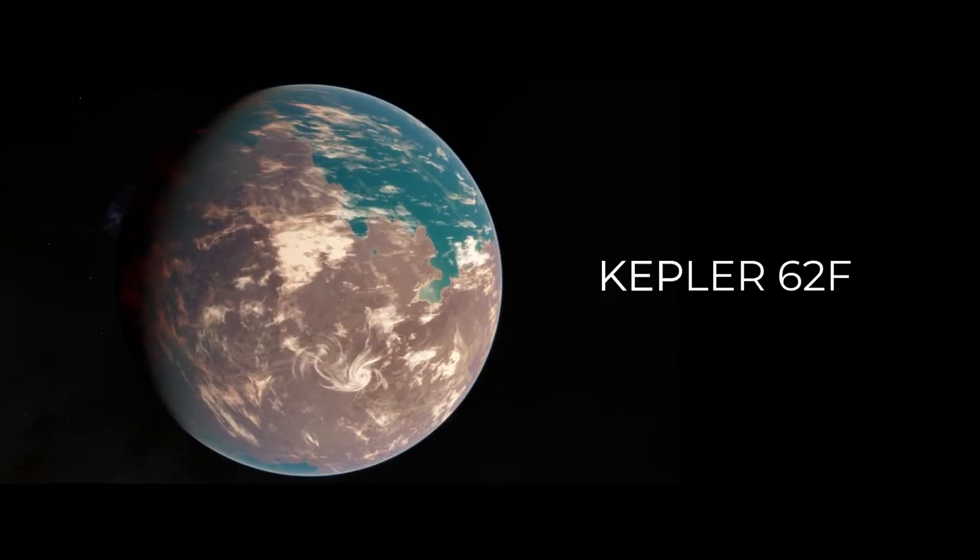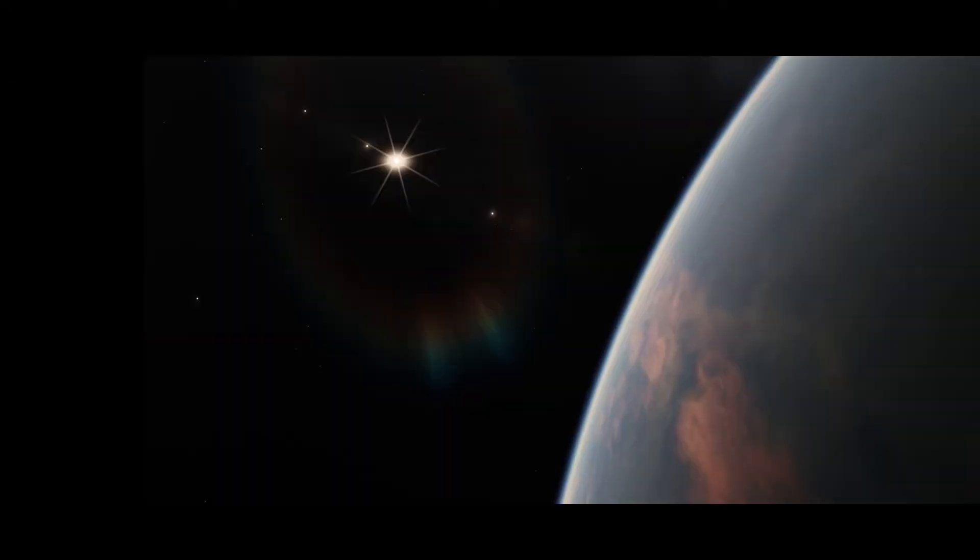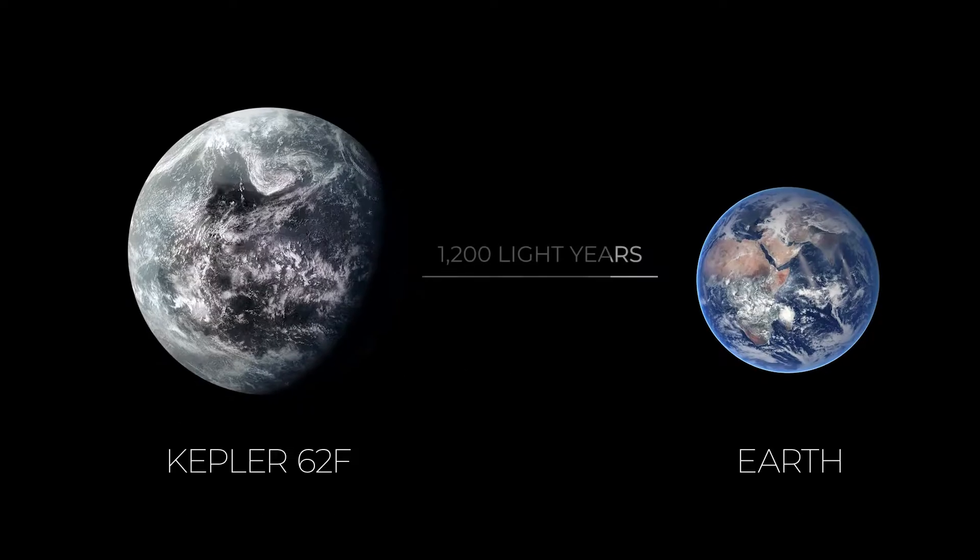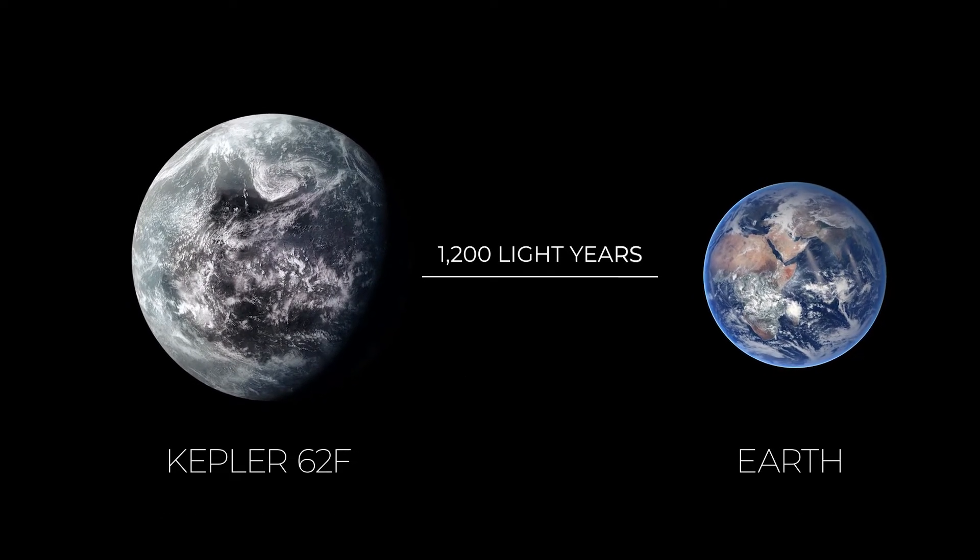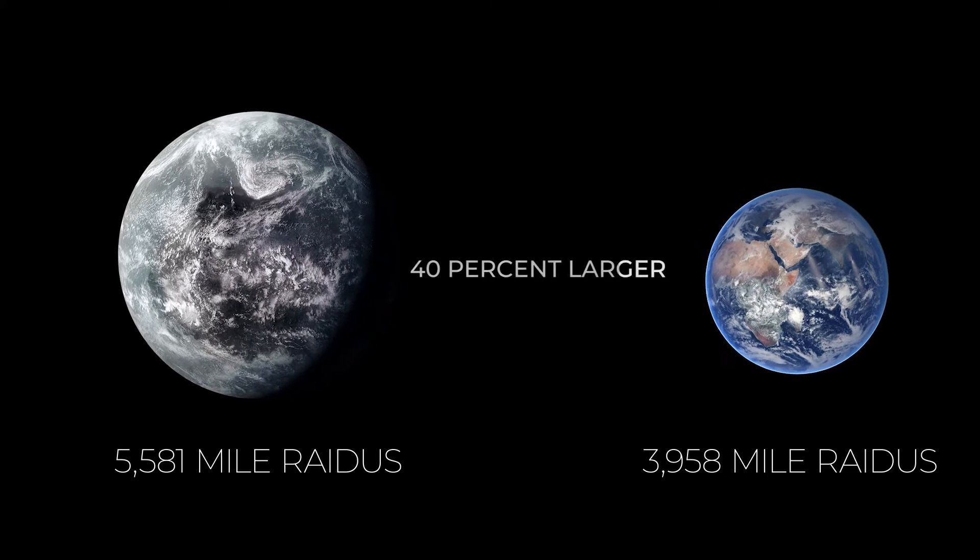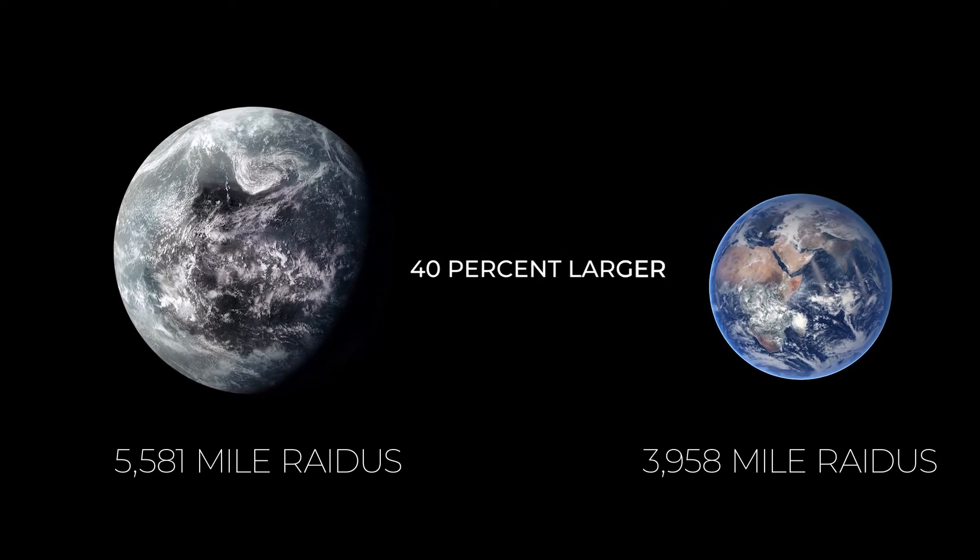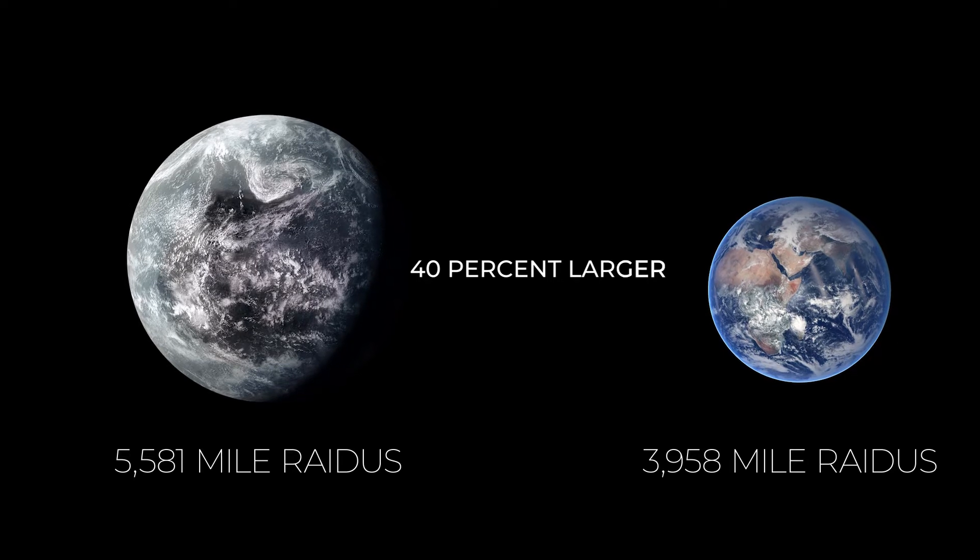Number 2: Kepler-62f. Kepler-62f lies about 1,200 light-years away. NASA says that the planet is about 40% larger than Earth and orbits a star much cooler than our sun.